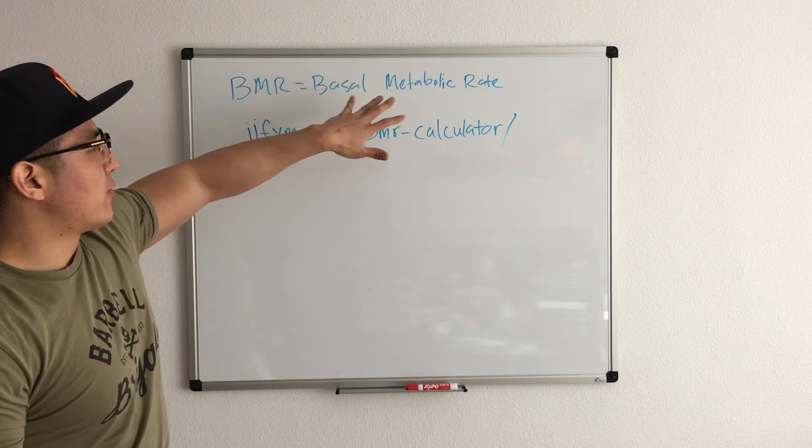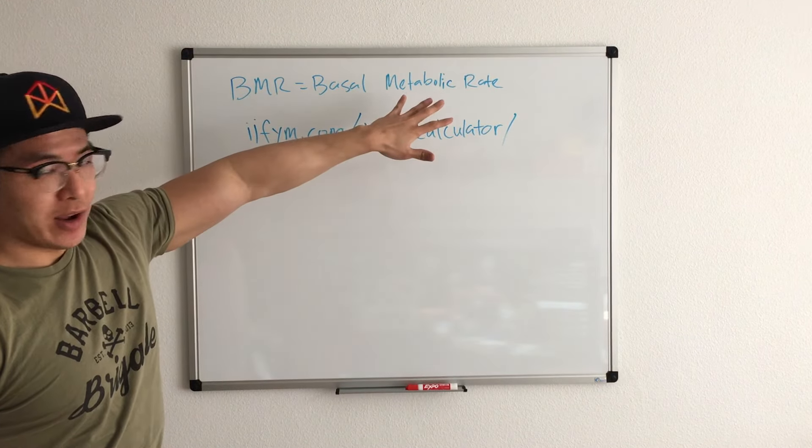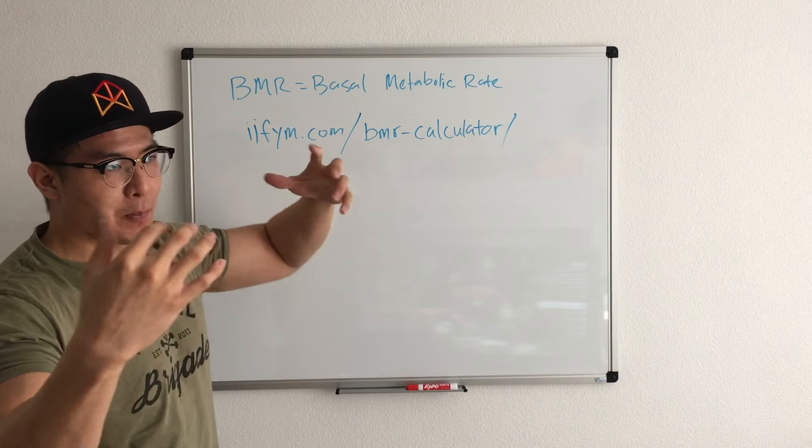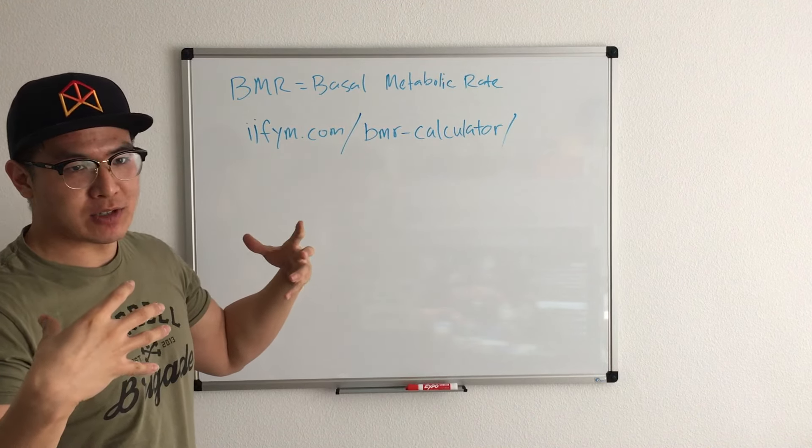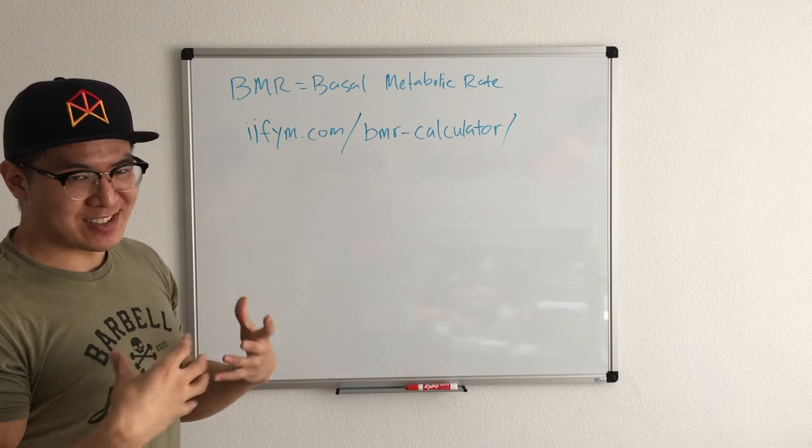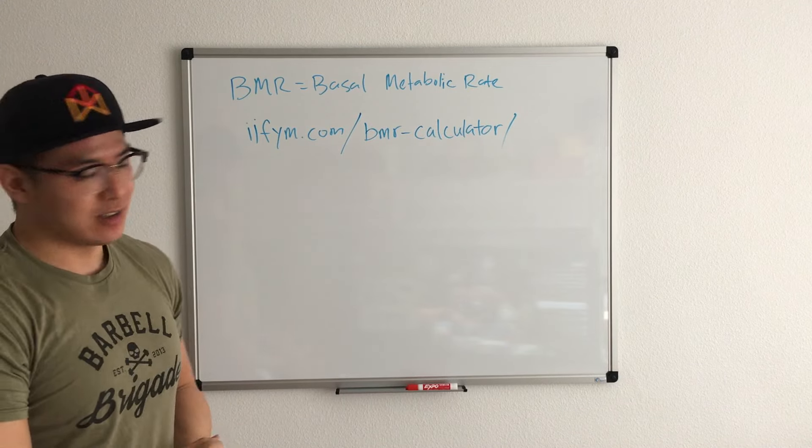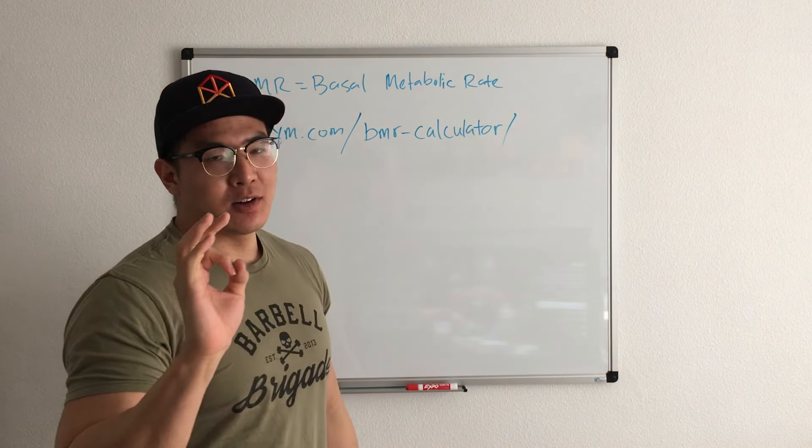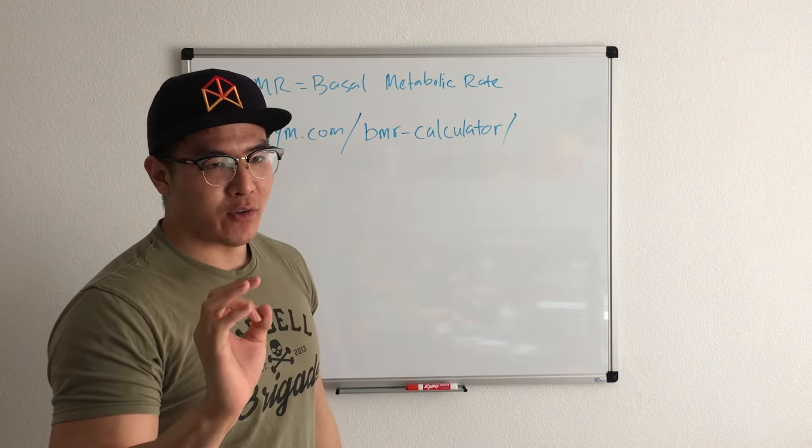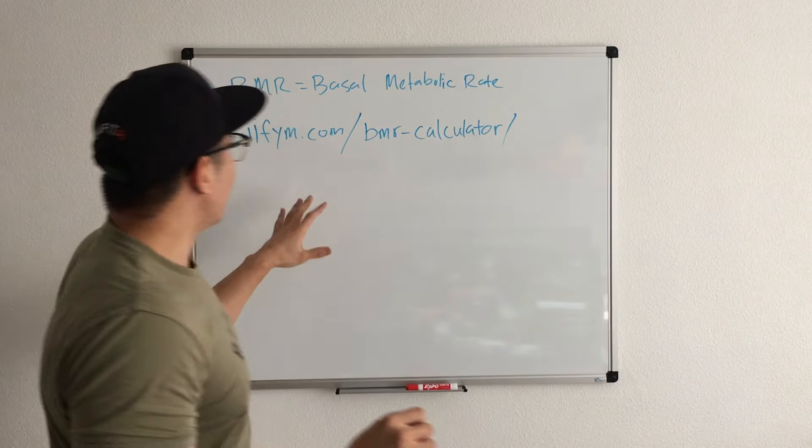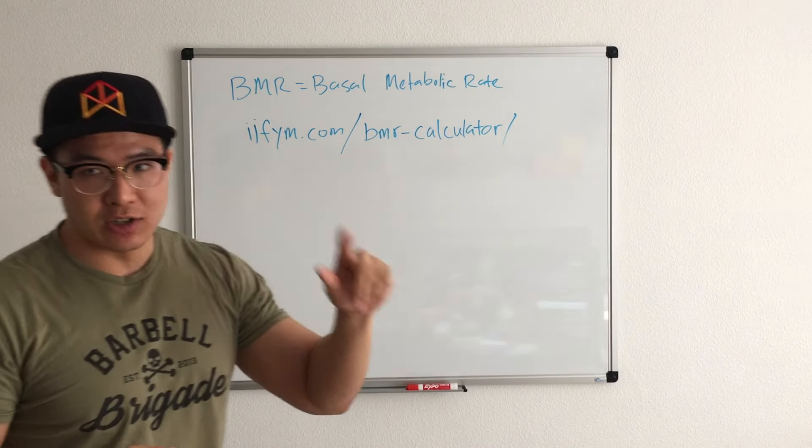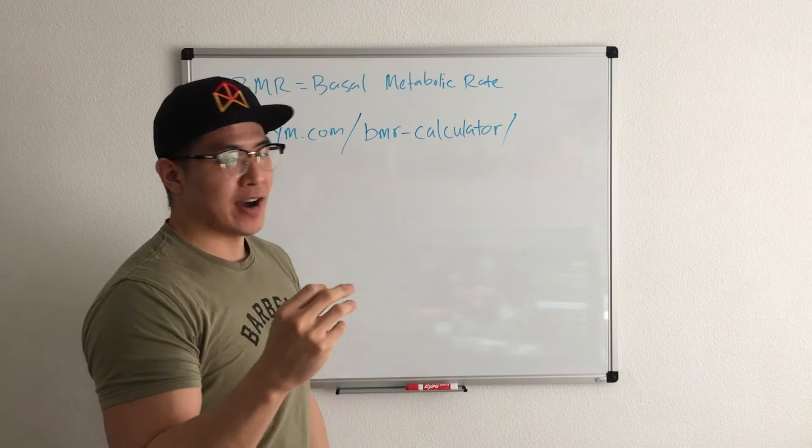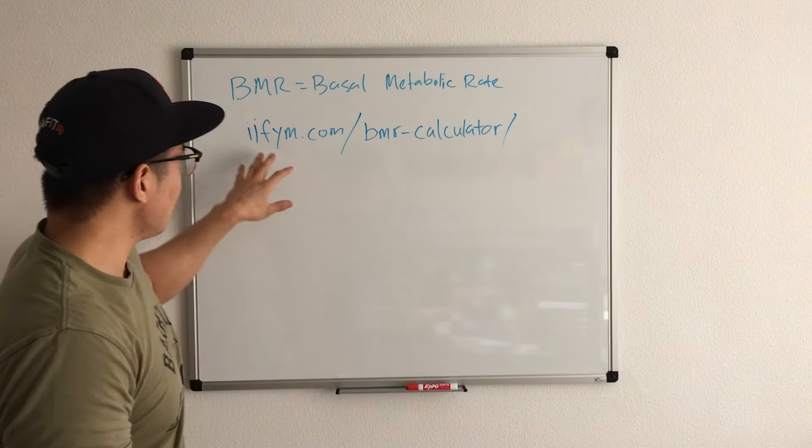So BMR stands for basal metabolic rate. That's how much your body needs to stay alive, how much calories your body's intake to function. There's a lot of formulas out there, but it gets a little confusing if I write down the whole formula verbatim. So there's other calculators you could use, and I'll tell you one of the sites I like to use to find out my BMR: it's iifym.com/bmr-calculator.